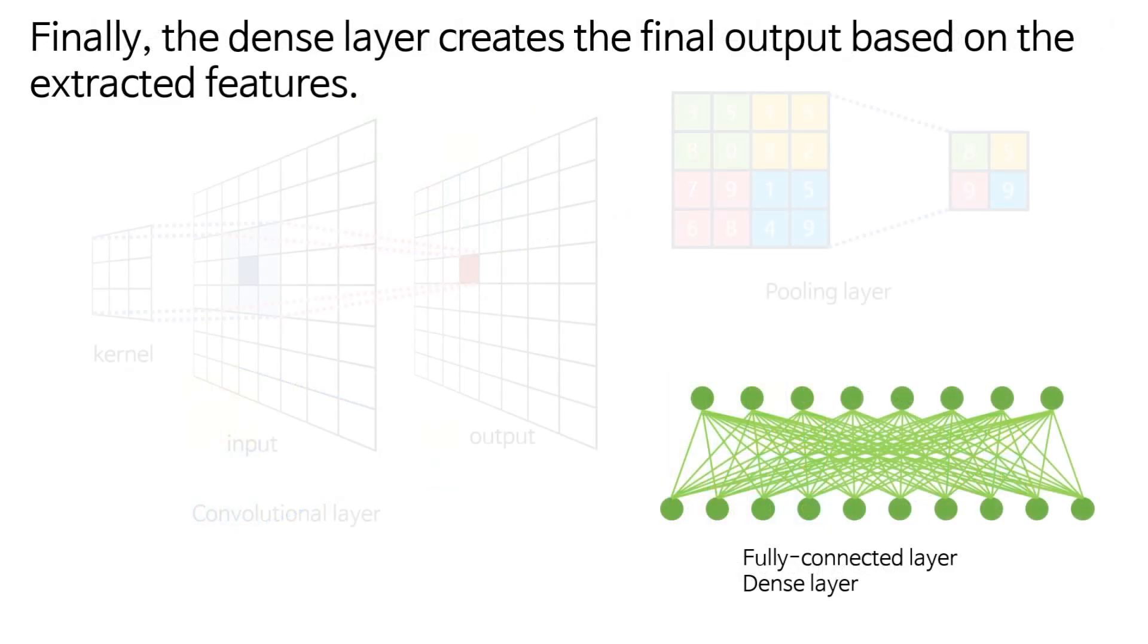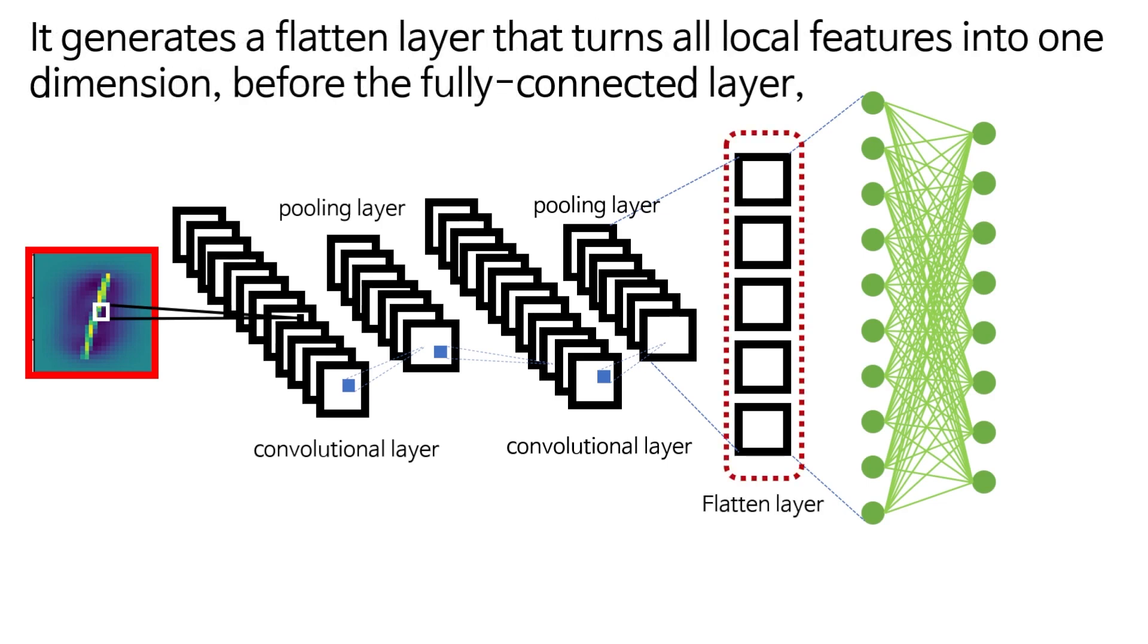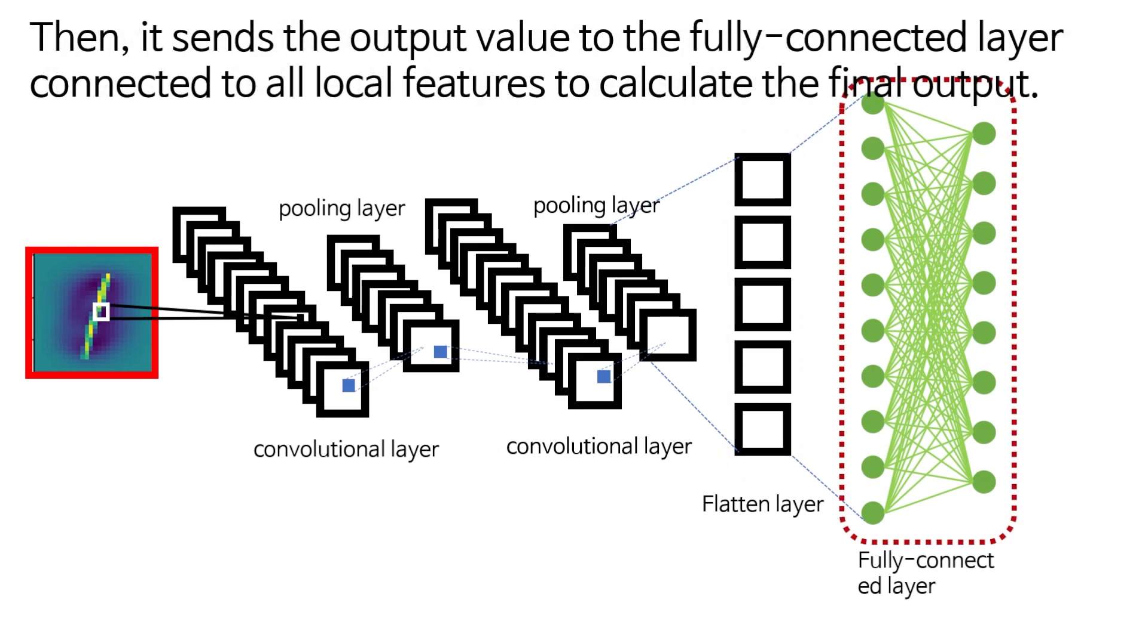Finally, the dense layer creates the final output based on the extracted features. To create the final output, the fully connected layer is usually at the end of the CNN model. It generates a flattened layer that turns all local features into one dimension before the fully connected layer, then sends the output value to the fully connected layer connected to all local features to calculate the final output.